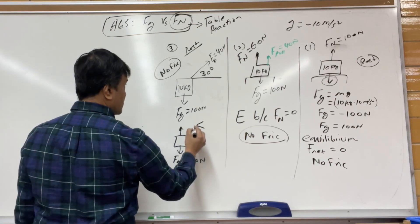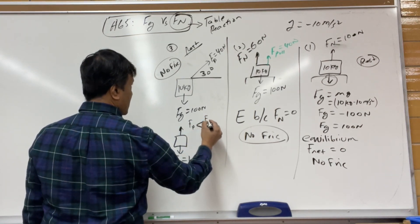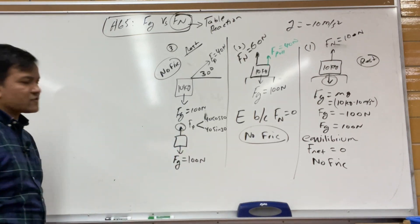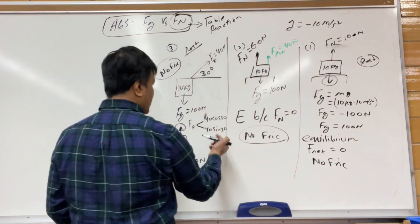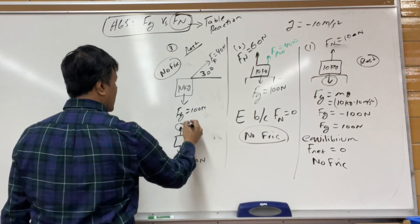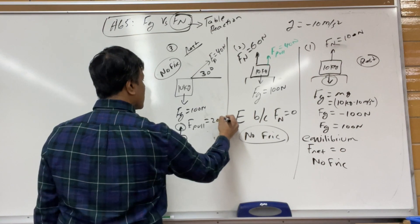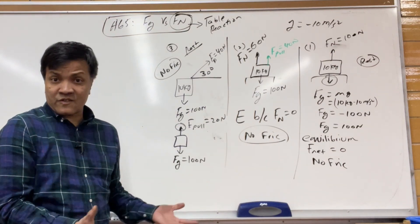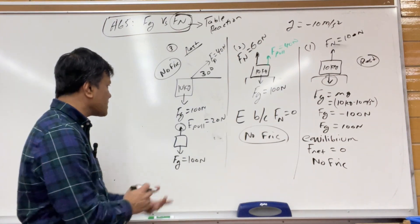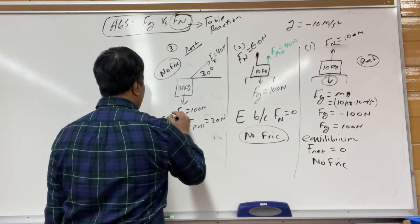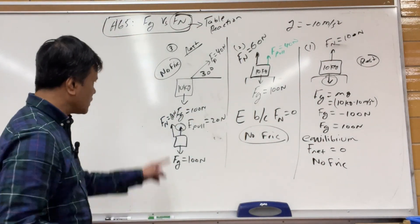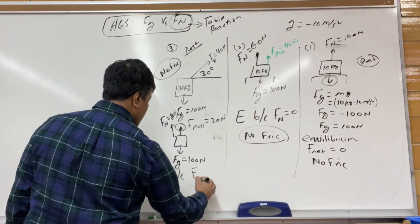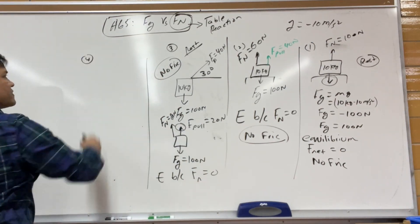The pull force has two components: 40 cosine 30 in the x-direction and 40 sine 30 in the y-direction. 40 sine 30 equals 20 newtons upward. The table reaction — normal force — is therefore 80 newtons, because 80 plus 20 equals 100, minus 100 equals zero. The object is in equilibrium because the net force is zero.